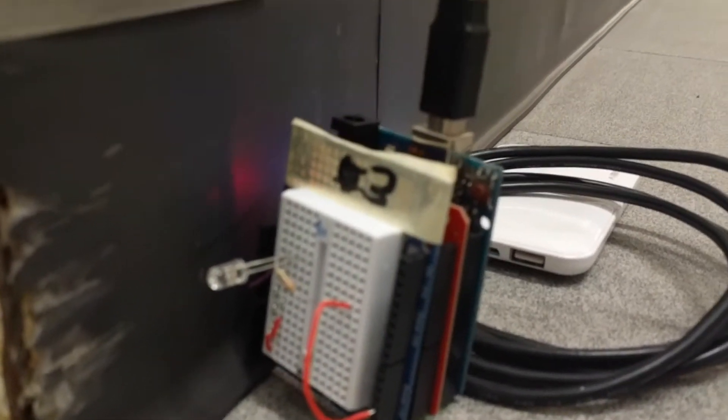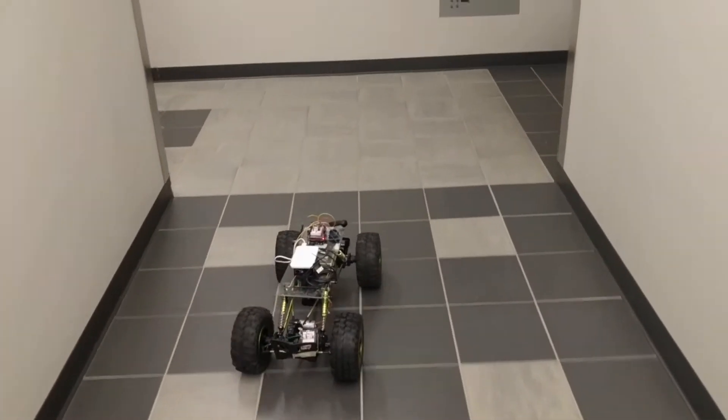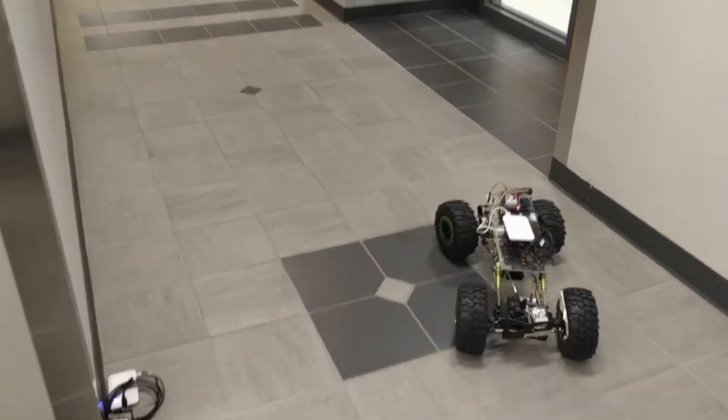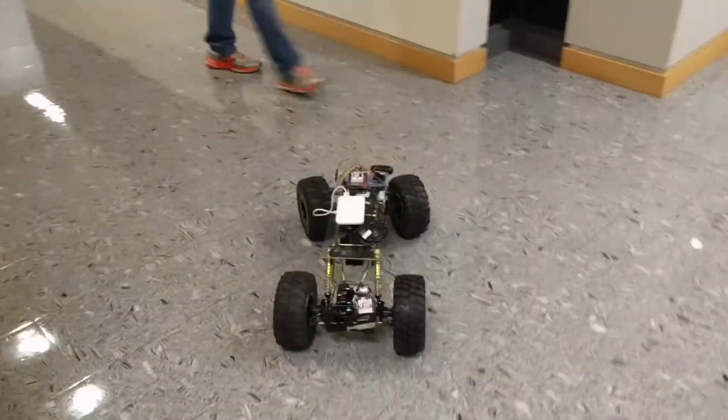We programmed custom IR beacons for each of the four corners. Here are two working demos of the car turning left. When the car passes the corner, the IR beacon is detected.